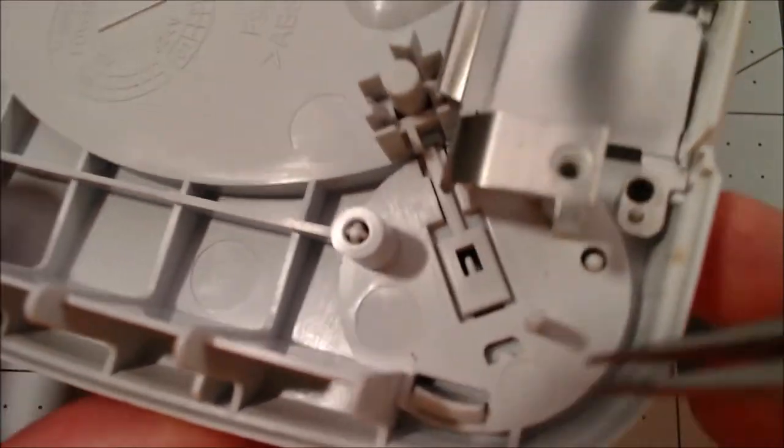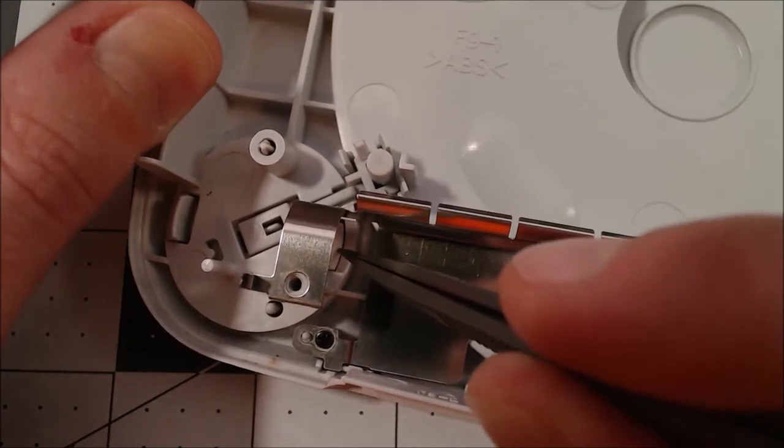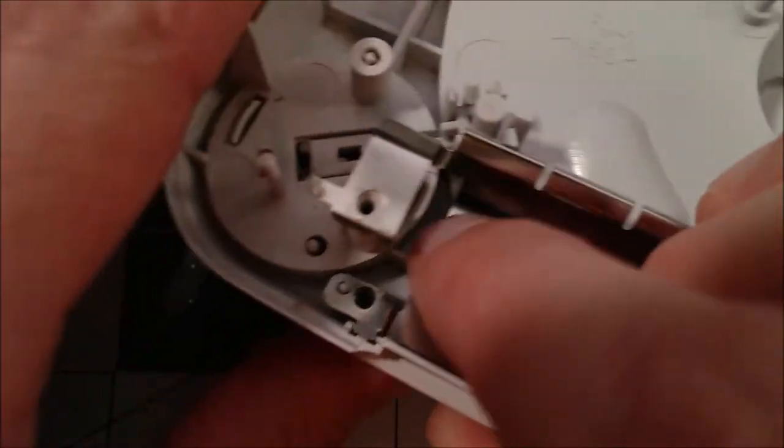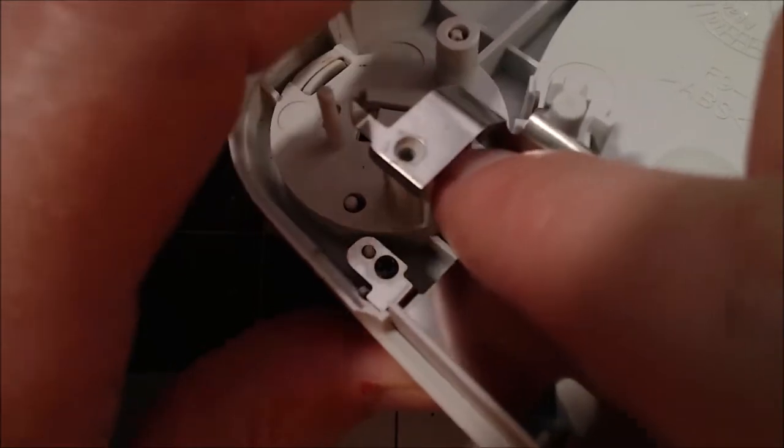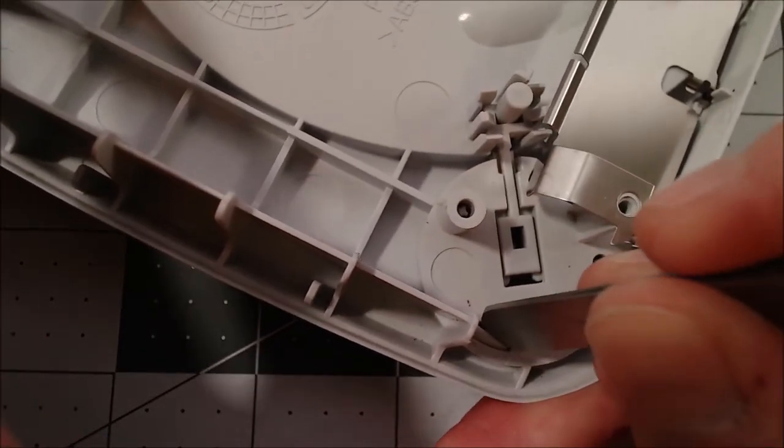First thing we're going to do is pull the button out. There's a clip right here and there's one right there, but under this metal piece as well. Now I'll use the back end of my tweezers to push these through a little more.